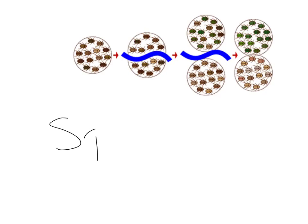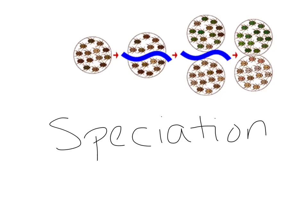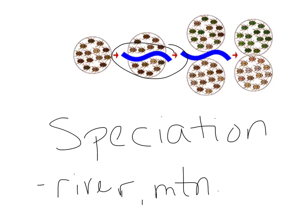Today's video is going to focus on speciation, which is really just the formation of a new species. We have a population, and for some reason that population has been separated — you can see that happening here in the insect population. That reason could be a physical barrier: river flow direction, mountains, the formation of the Grand Canyon. For some reason, a portion of the population becomes isolated, so they are no longer interacting with the other section of the population.